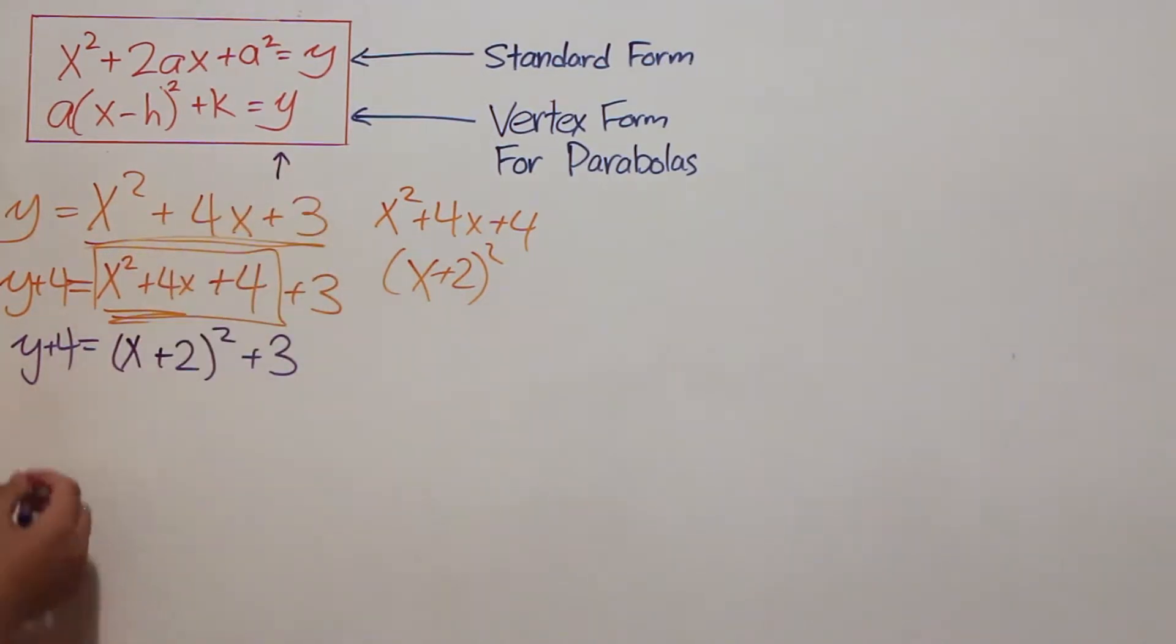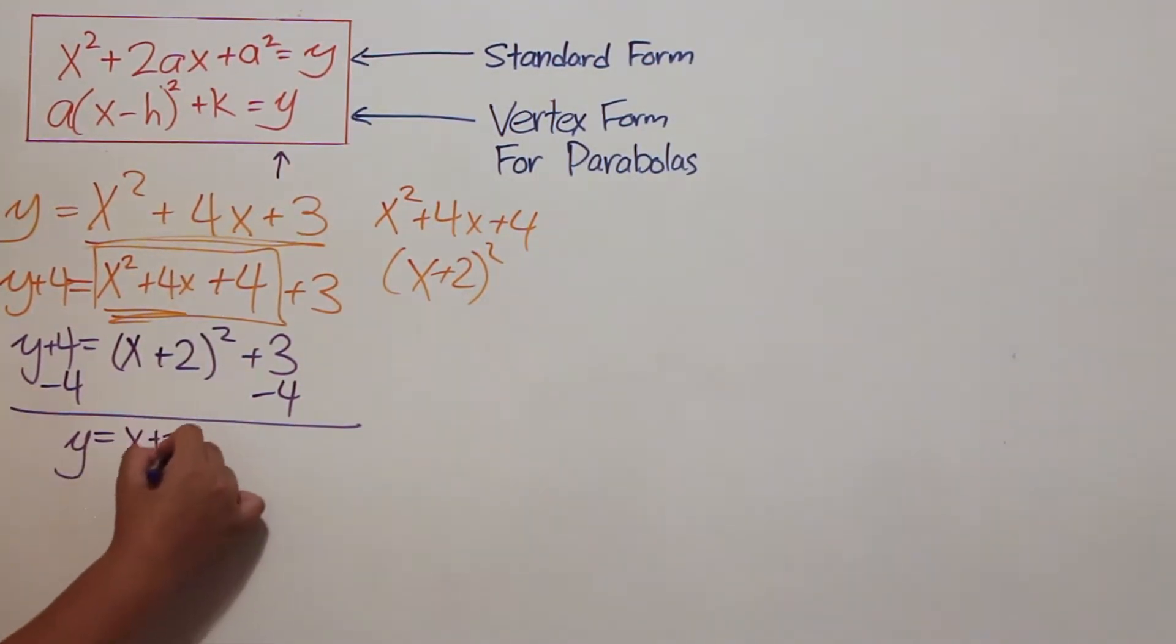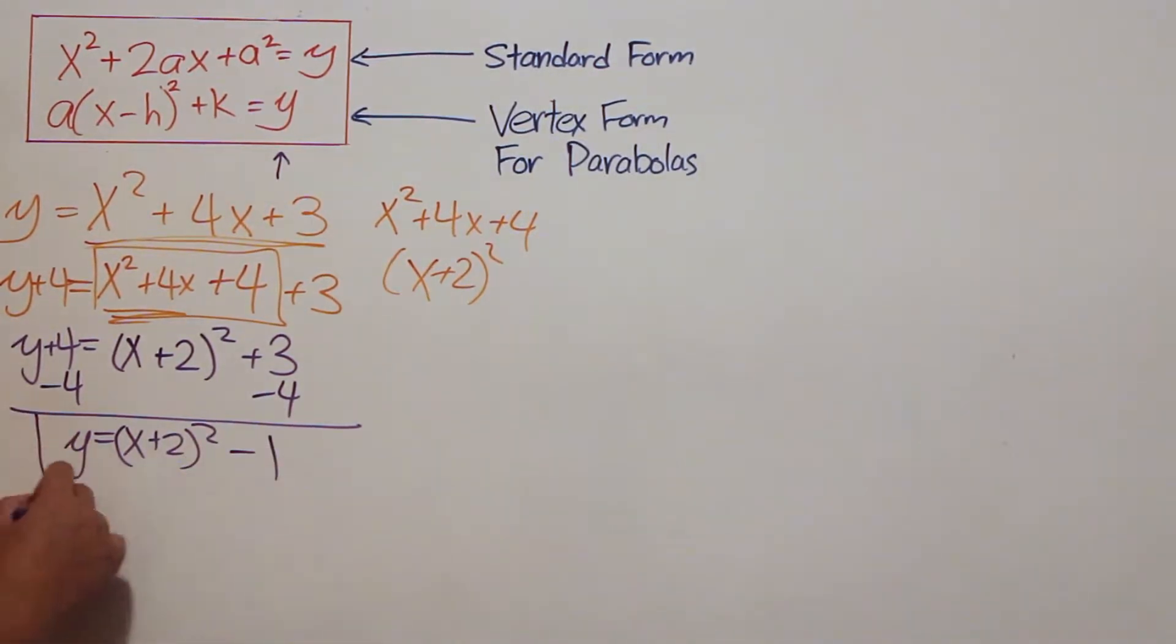Now, we isolate the y to get in the same format as the vertex form, and we end up with the answer of y equals quantity x plus 2 squared minus 1.